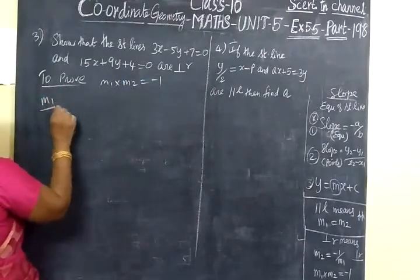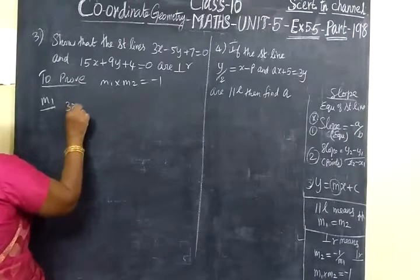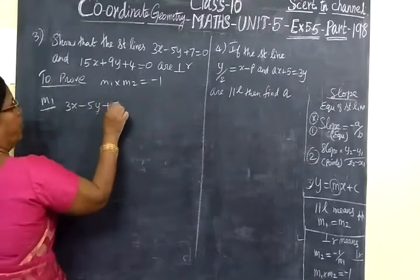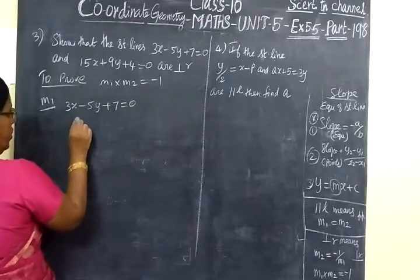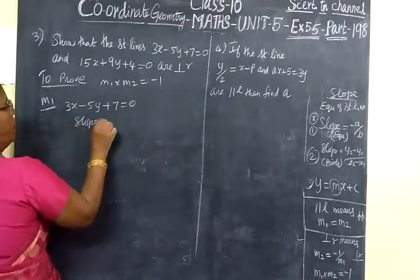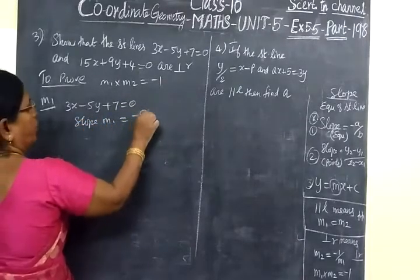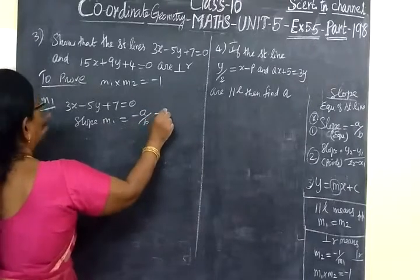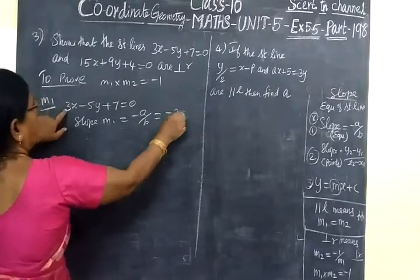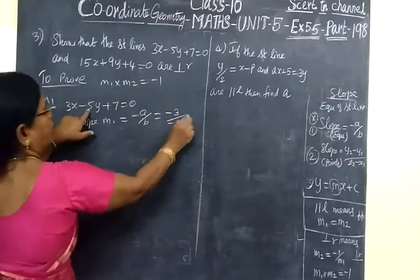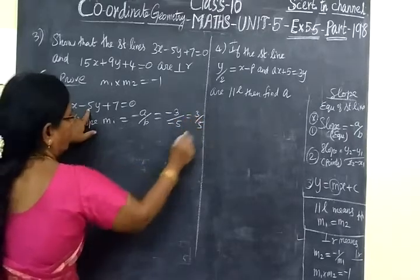First, we find M1. We take and write the first equation: 3x minus 5y plus 7 equal to 0. So slope M1 equal to formula minus A by B, which is 3 by minus 5. Carefully you write it. So M1 equals 3 by 5.